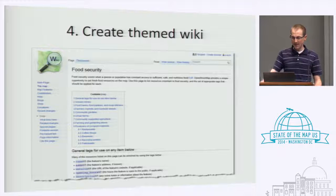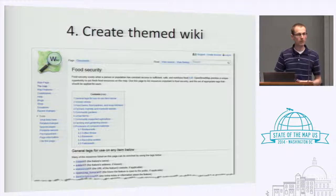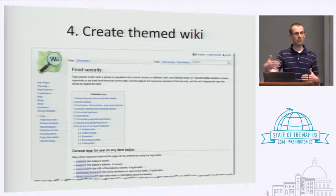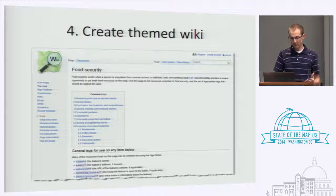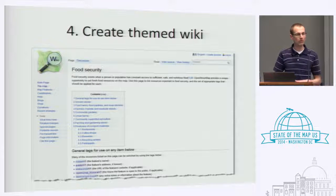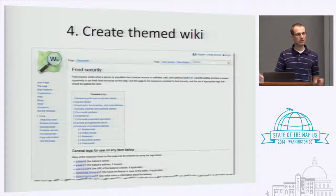Once we had pulled together the tags we wanted to use, we created a themed wiki page on the OpenStreetMap wiki. Under mapping projects, you can create a page where you organize the work around a certain theme. We couldn't find a theme around food production — in academia it's called food security — so we just made this page. This is where we give some of the common tags we like to put on those items, and we invited anybody interested to mark their city and where they were working and provide comments.